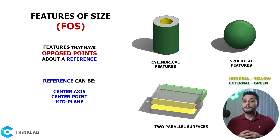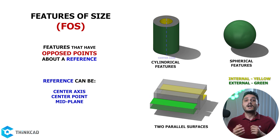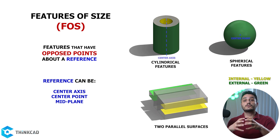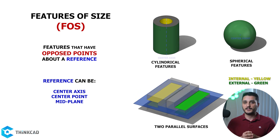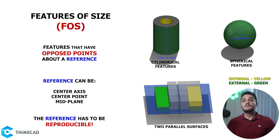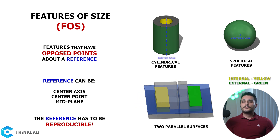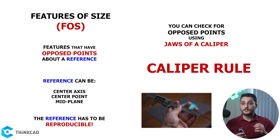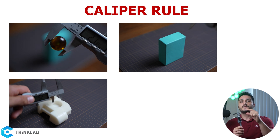All three types create opposed points. In a cylindrical feature, you have points on opposite sides compared to your center axis. In spherical features, you have opposed points compared to a center point, and in tabs and slots, you have opposed points on both sides of a midplane. Another condition for a feature of size is that the reference has to be reproducible, meaning it has to be the same reference on every component that you manufacture. One very easy way to check if you have opposed points is to use a caliper — many people know this as the caliper rule. It basically says if you can grab a feature with the jaws of your caliper, you have a feature of size.